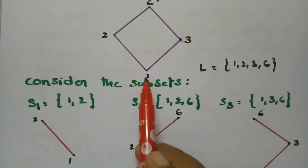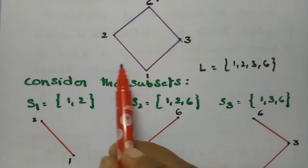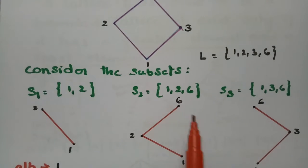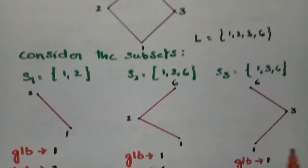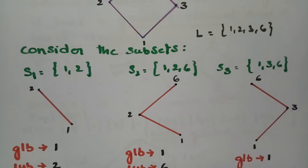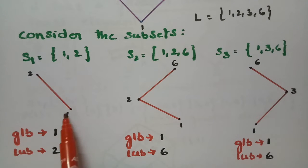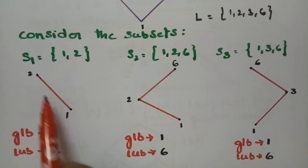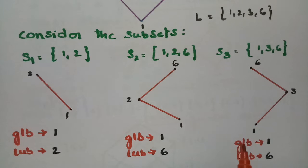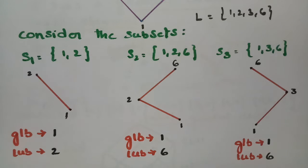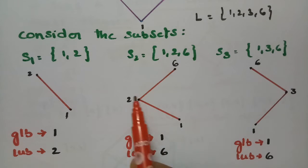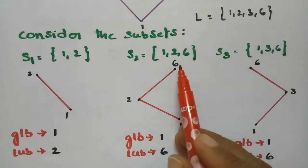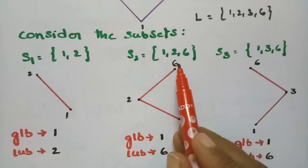For subset {1, 2}: the greatest lower bound is 1 and the least upper bound is 2. For subset {2, 6}: the greatest lower bound is 2 and the least upper bound is 6. For subset {1, 6}: the greatest lower bound is 1 and the least upper bound is 6.